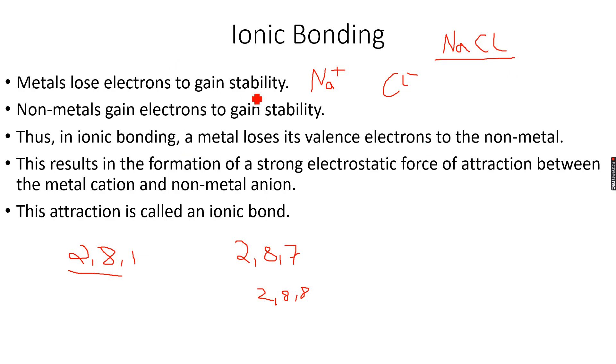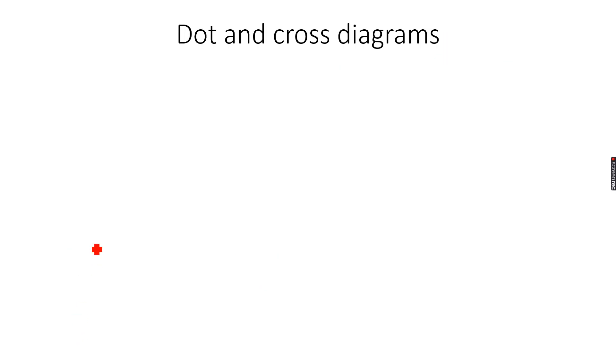So this will form an ionic bond. Now this is exactly what ionic bonding is about - metals react with non-metals to form ionic compounds. So how do we represent this ionic bonding using dot and cross diagrams?